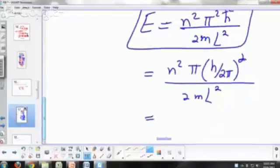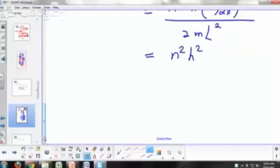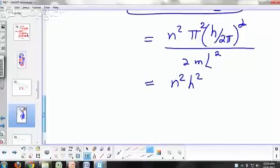So that gives you n squared. Wait, this is pi squared. Pi squared cancels out. So that's n squared h squared over 2 squared is 4 multiplied by 2. That gives you 8 M L squared in the denominator.